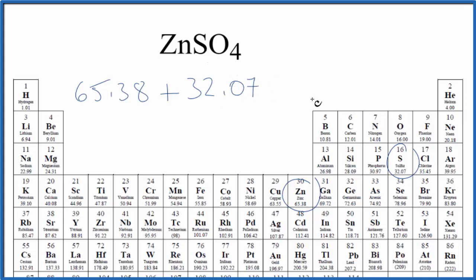We just have one sulfur and then oxygen is 16.00 grams per mole. We have four oxygen atoms so we're going to multiply this times four.